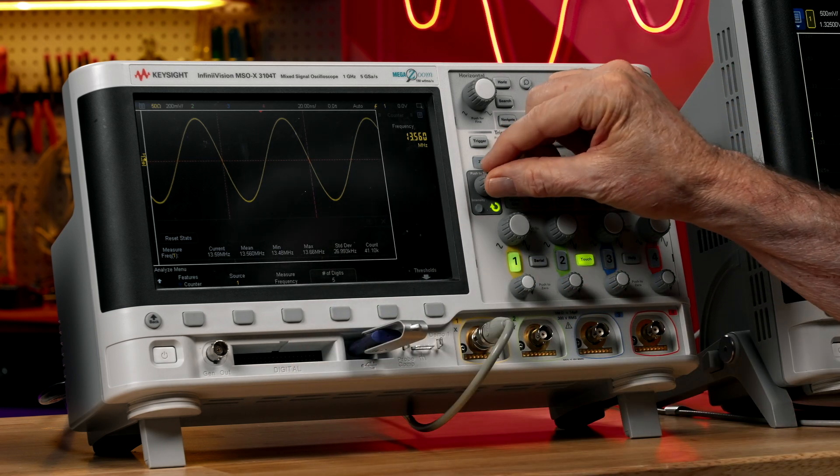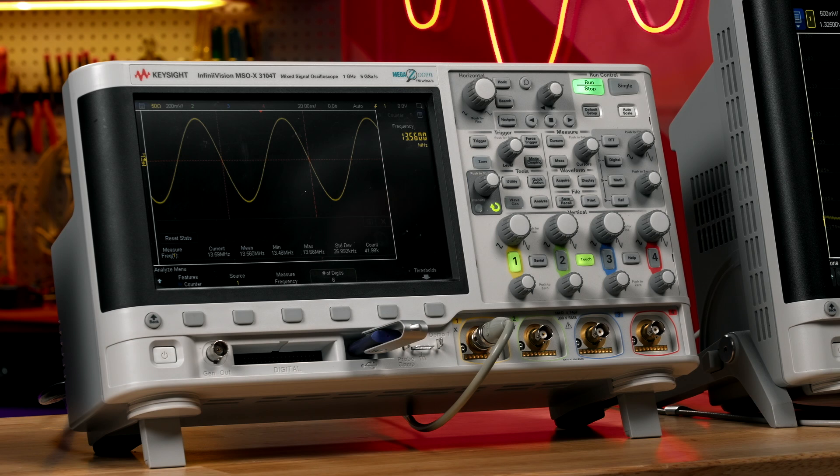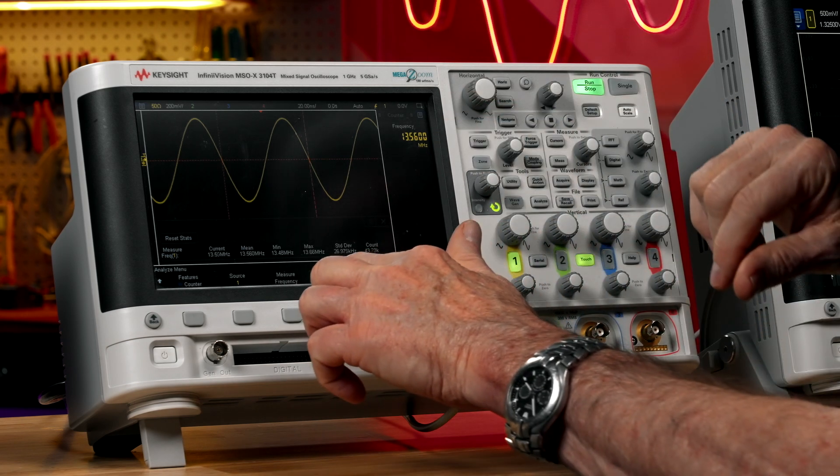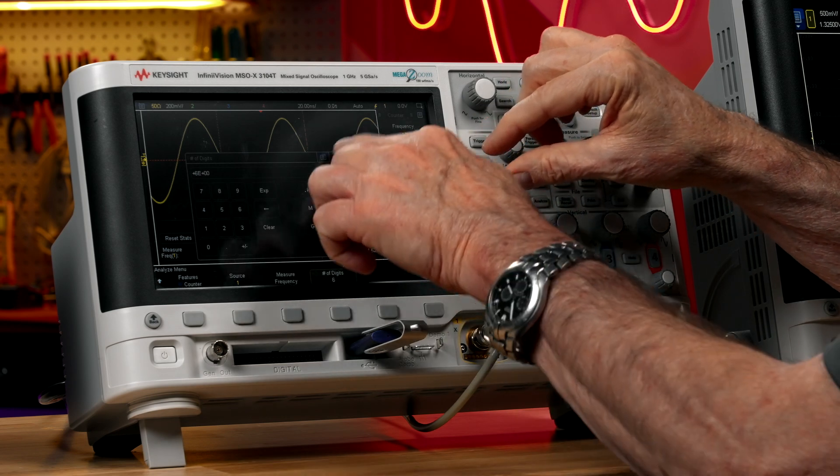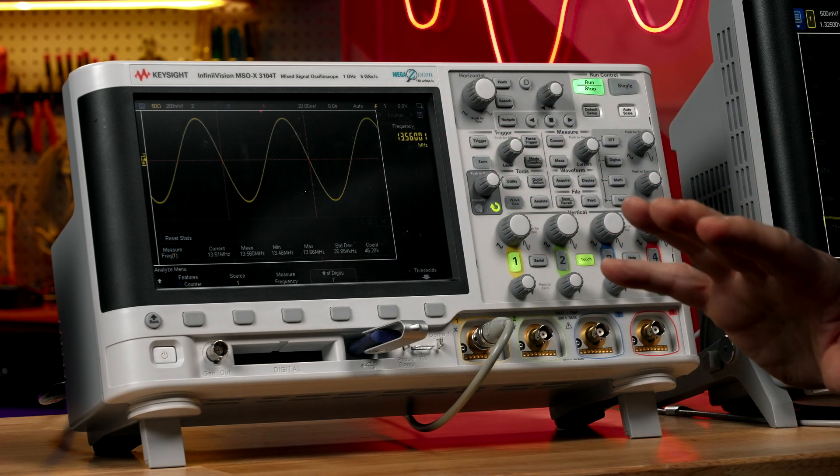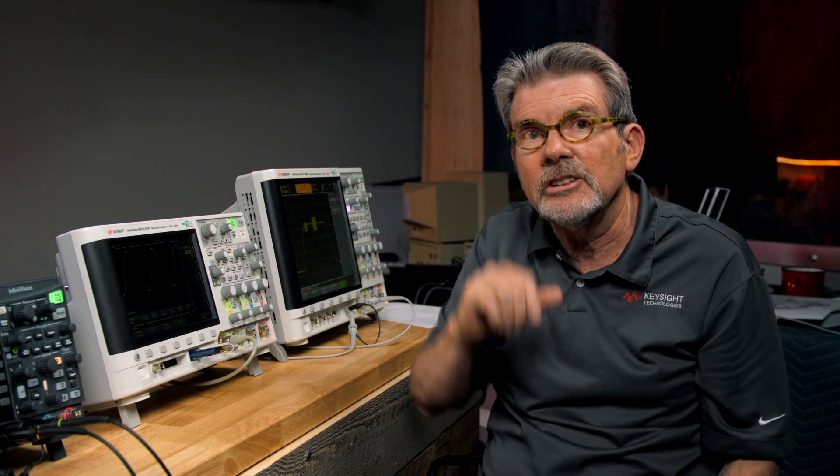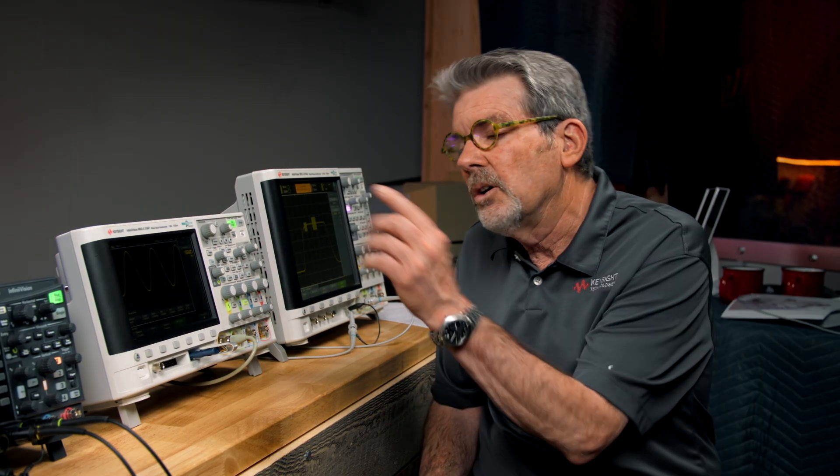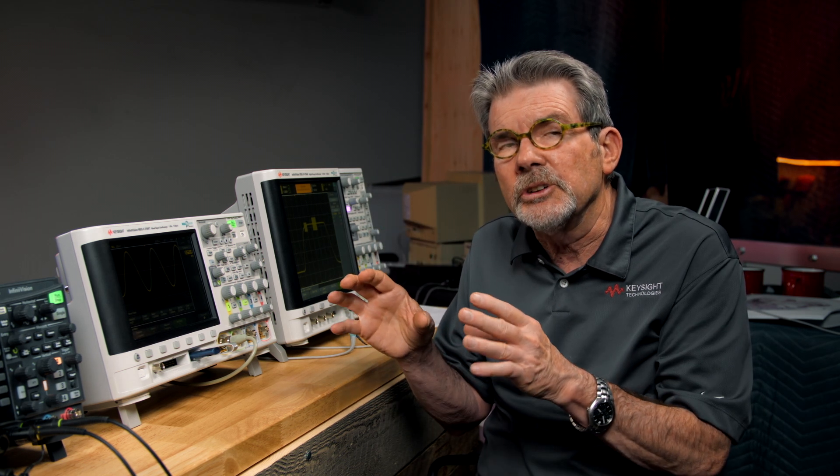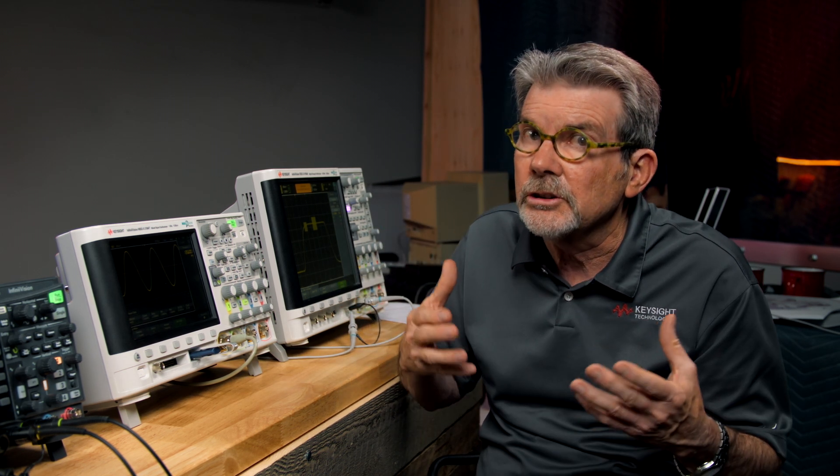Now I can increase to six digits. Now you see six very stable digits. Seven digits takes a little longer to make the measurement, but you can see seven stable digits. Or I could go all the way up to eight digits. The gate time is about 10 seconds long. So you can see it makes very stable measurements relative to conventional oscilloscope frequency measurements.